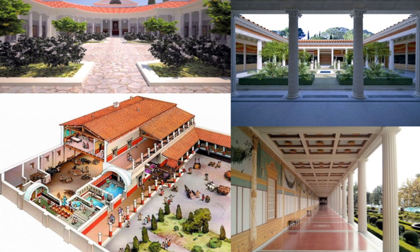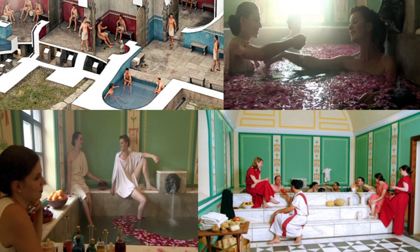A better equipped rustic villa consisted of: one, the Pars Urbana, where the owner or maybe the estate manager lived, which had a vestibulum, atrium, tablinum, cubiculi, culina, at least one triclinium, and a rare colonnaded peristilium — in this case, not unlike a typical Roman domus. And given how far away it normally was from a city, it might even have its own caldarium or baths.